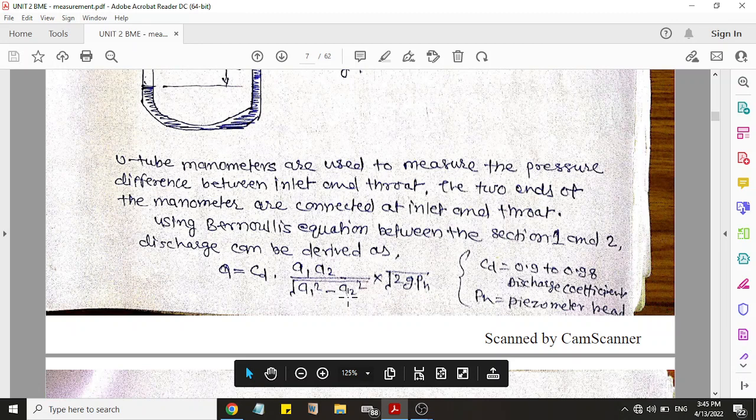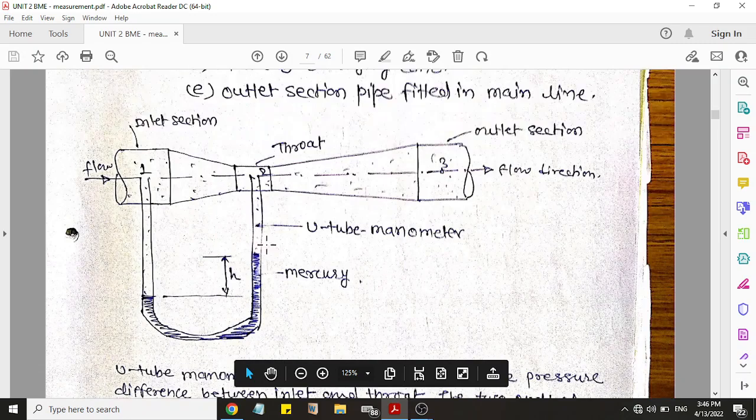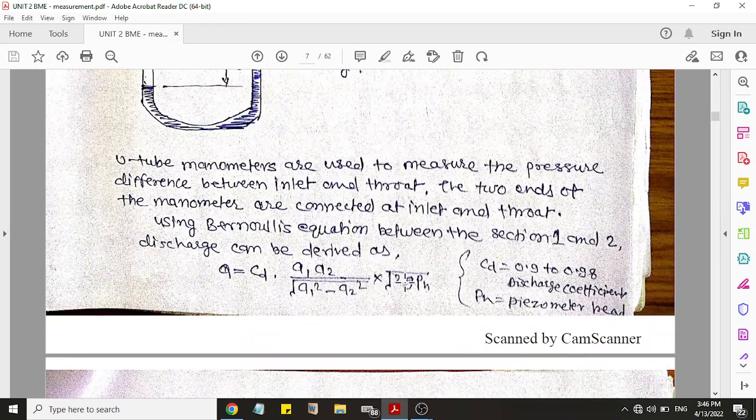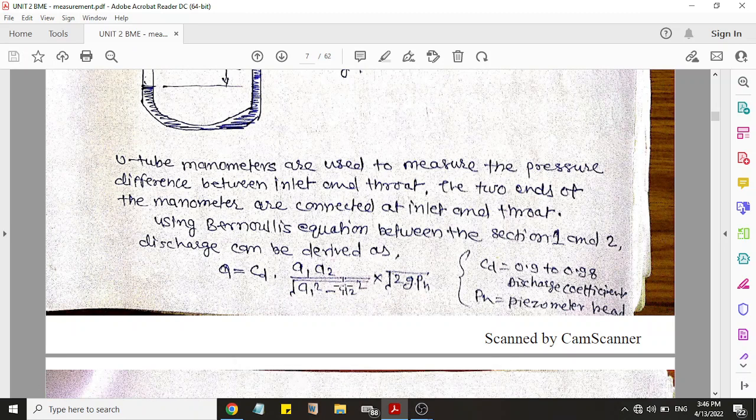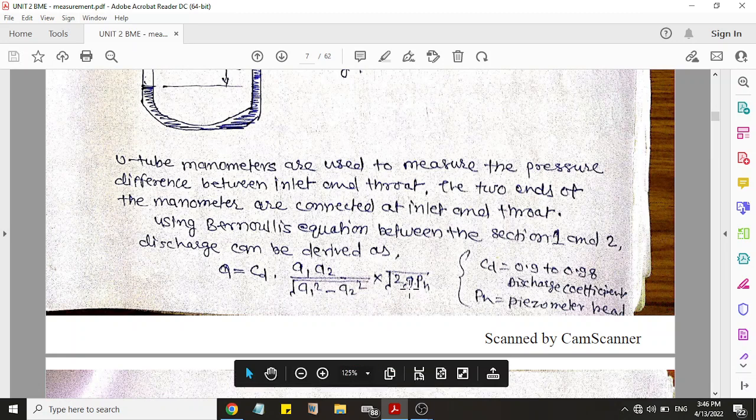So a1, a2 is the cross-section area at point one and two. And CD is the coefficient of discharge of venturimeter, it is a constant value which comes with the venturimeter when you purchase it. And g is 9.81, and this ρH is basically piezometer head.